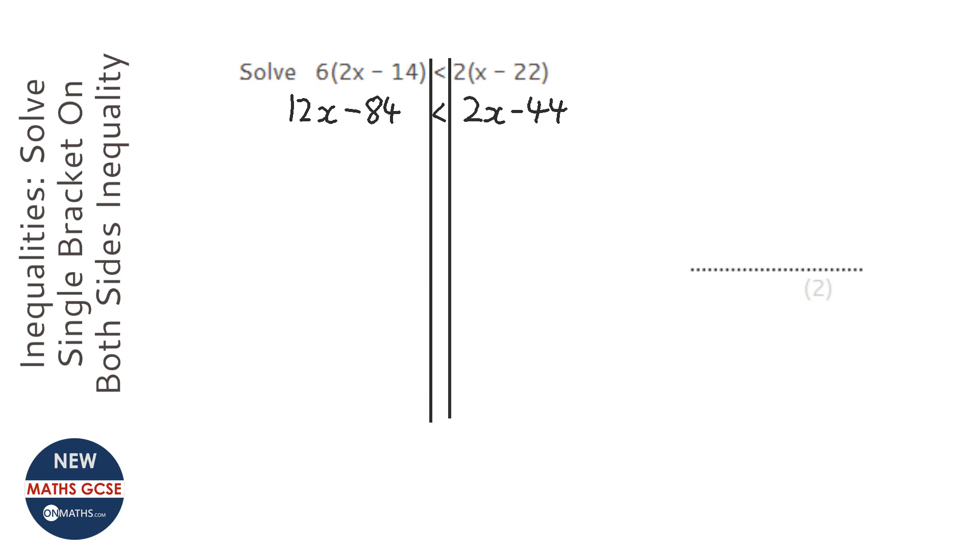So minus 2x from both sides. So it'd be 10x minus 84 is less than minus 44. Then we're going to add 84 to both sides.